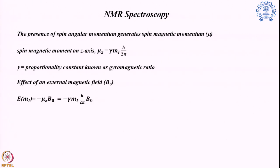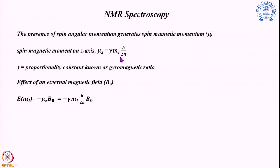When this spin magnetic moment experiences an external magnetic field, the energy of the system depends on the strength of the magnetic field. The energy of a particular state in the presence of magnetic field B0 is given by: E = −μ_z · B0, where μ_z = γ · m_i · (h/2π). So the energy of a particular state with magnetic quantum number m_i is −γ · m_i · (h/2π) · B0.